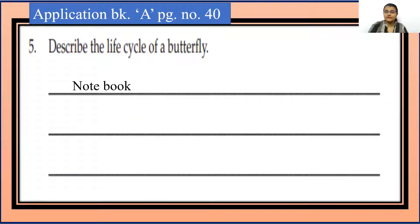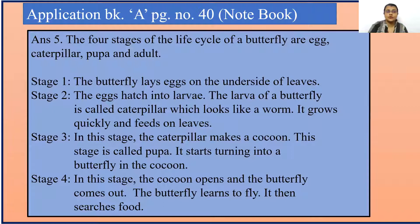Question 5. Describe the life cycle of a butterfly. This question you are going to write in your notebook. So the four stages of the life cycle of a butterfly are egg, caterpillar, pupa and adult.